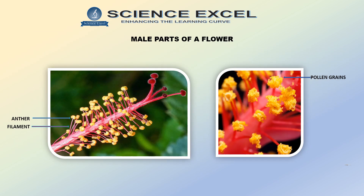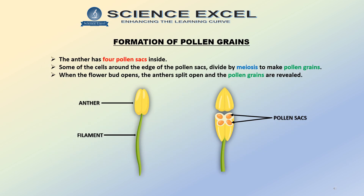In our previous video, we had examined the structure of a flower in detail. So, where are the male gametes present in a flower? The male gametes are present inside the pollen grains which are made in the anthers. Now let's learn more about pollen grains.